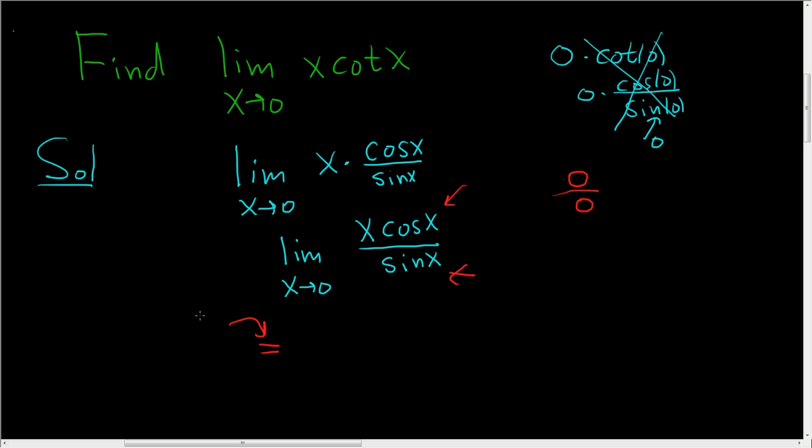So I'll indicate that by writing an LH here. So this is the limit as x approaches 0. And when we use L'Hopital's, we just take the derivative of the numerator and the denominator. Now in the numerator, we have to use the product rule. There's a product.